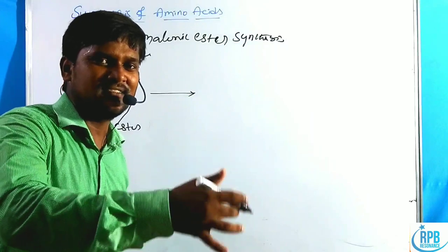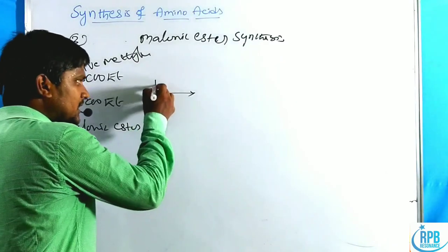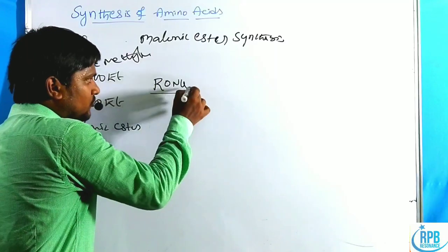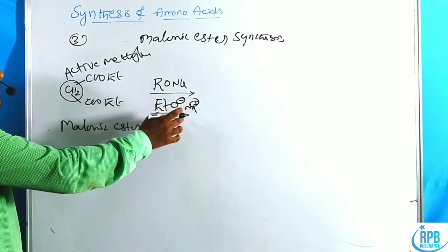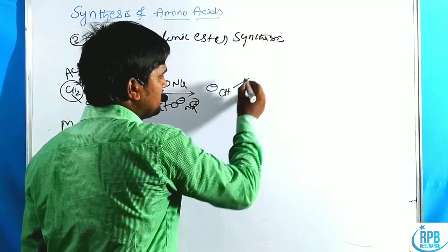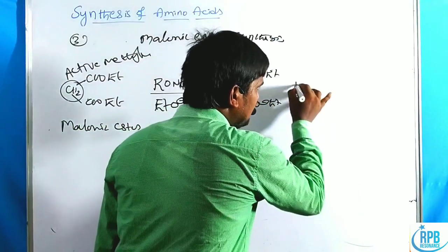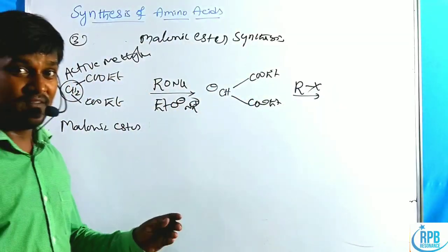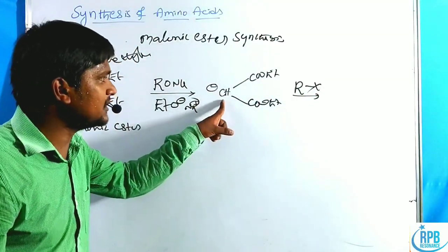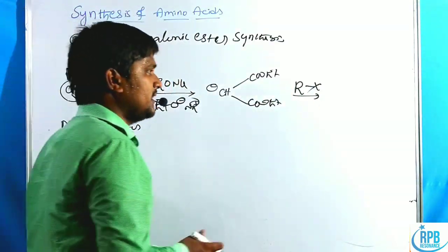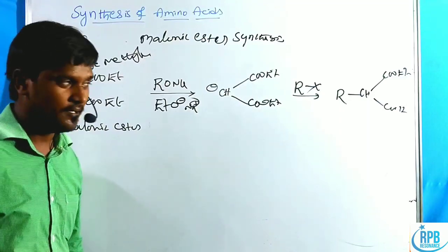In the presence of a base such as sodium ethoxide, the active methylene group is deprotonated to give –CH⁻(COOEt)₂. This carbanion undergoes nucleophilic substitution with an alkyl halide (the crucial step, analogous to Gabriel synthesis), attacking the electrophilic carbon of the alkyl halide to form a new C–C bond, giving R–CH(COOEt)₂.